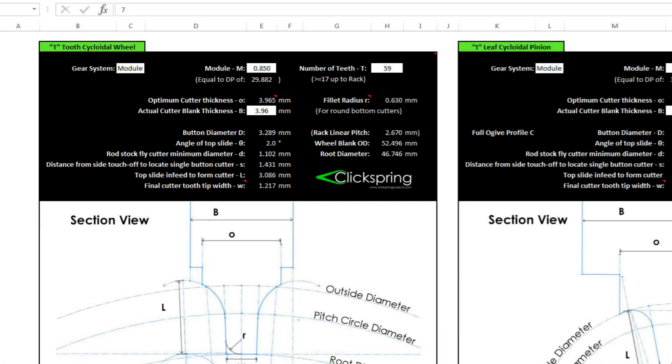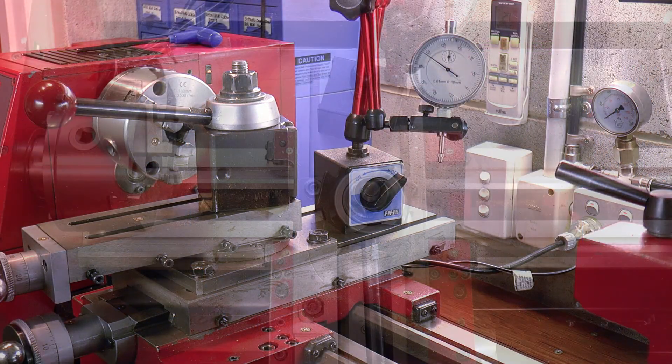It's not as accurate as a turned button, but can work well for cutters above roughly module 0.5. Next, the top slide is set to the correct angle. In this case for a wheel cutter, that's 2 degrees.